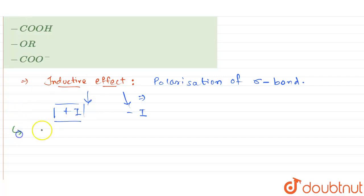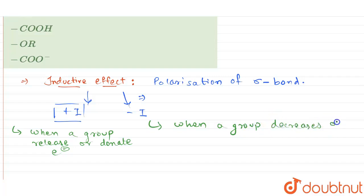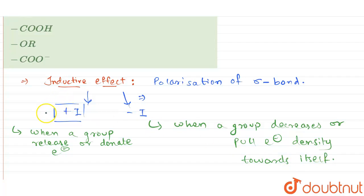So concentrating on the plus I effect: in this case, what happens is when a group releases or donates electron density, that is known as plus I effect. Whereas in the case of minus I effect, when a group decreases or pulls electron density towards itself, that is minus I effect. So basically, electron withdrawing groups show minus I effect and electron donating groups show plus I effect.